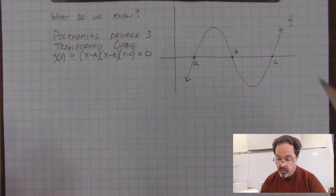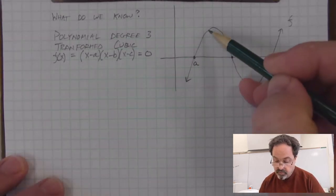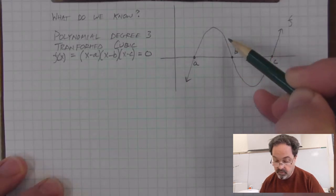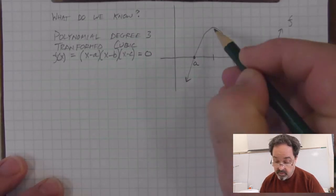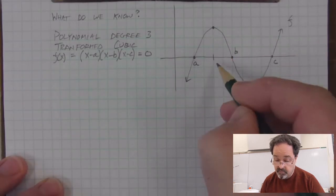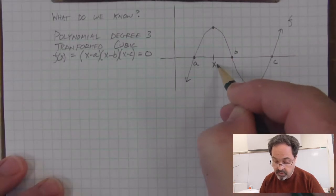What else do we know? Well, we could see that the curve reaches a peak, or a maximum, here. And this place in the domain in which there is a maximum value, we could label, we'll call it x sub 1.